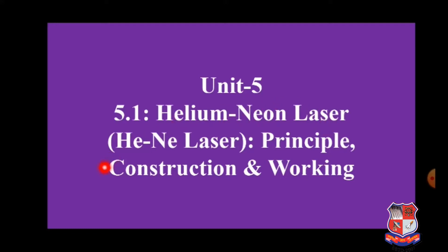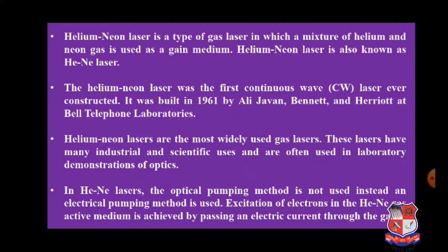This laser is globally known as the HeNe laser. In this article we are going to observe its principle, its construction — meaning what components are used and how they are arranged — and lastly the working of this laser, that is how photon light is generated using helium and neon gases. The helium-neon laser is a type of gas laser in which a mixture of helium and neon gas is used as a gain medium.